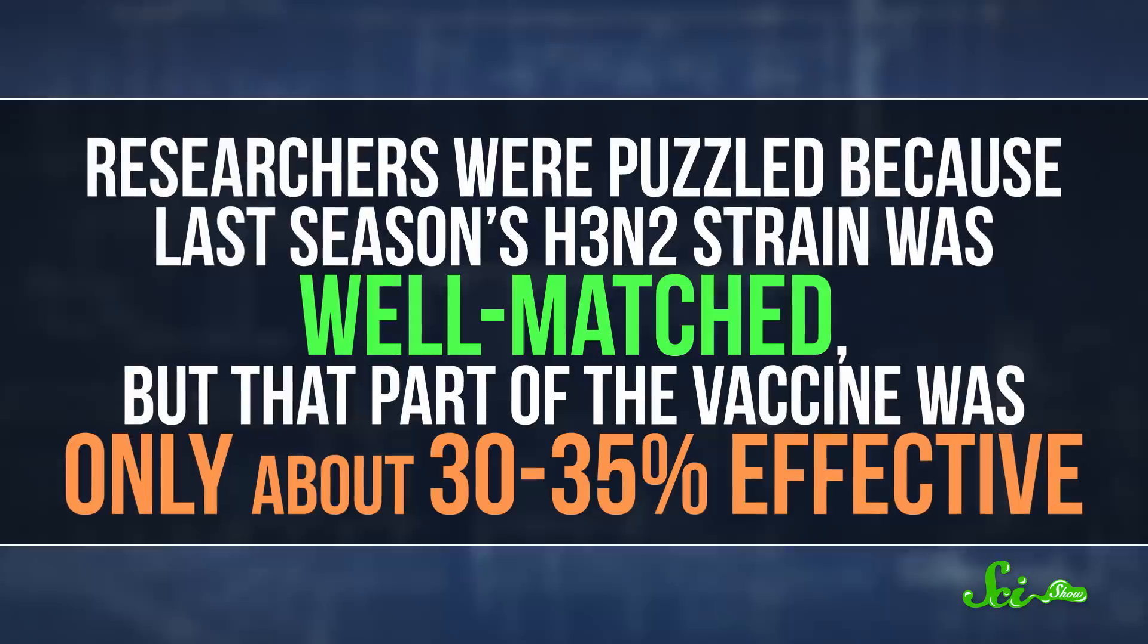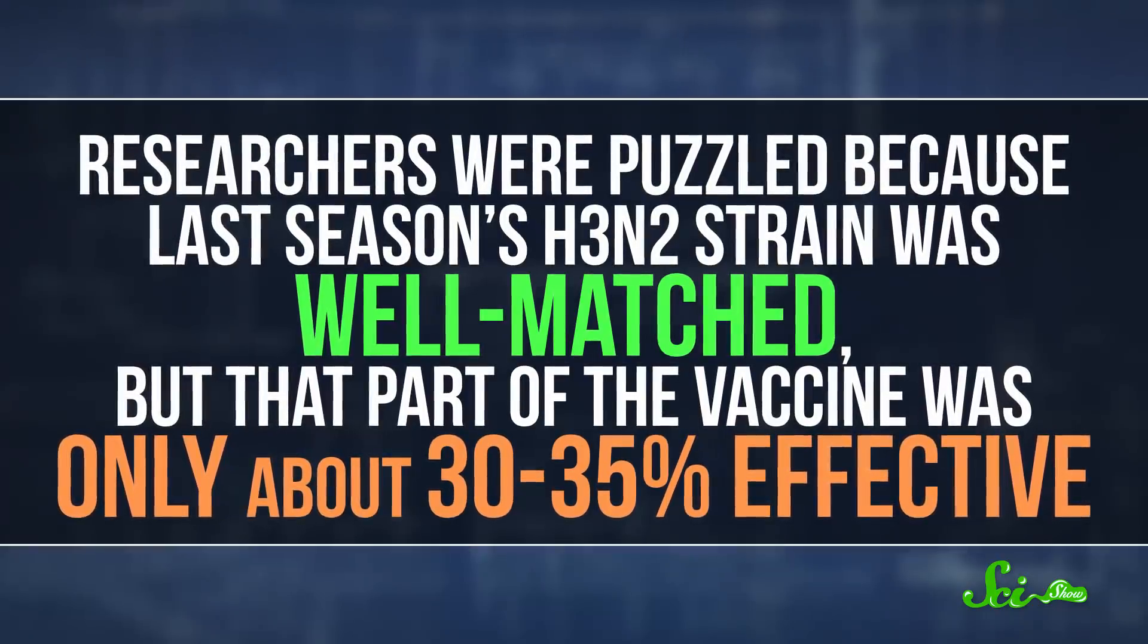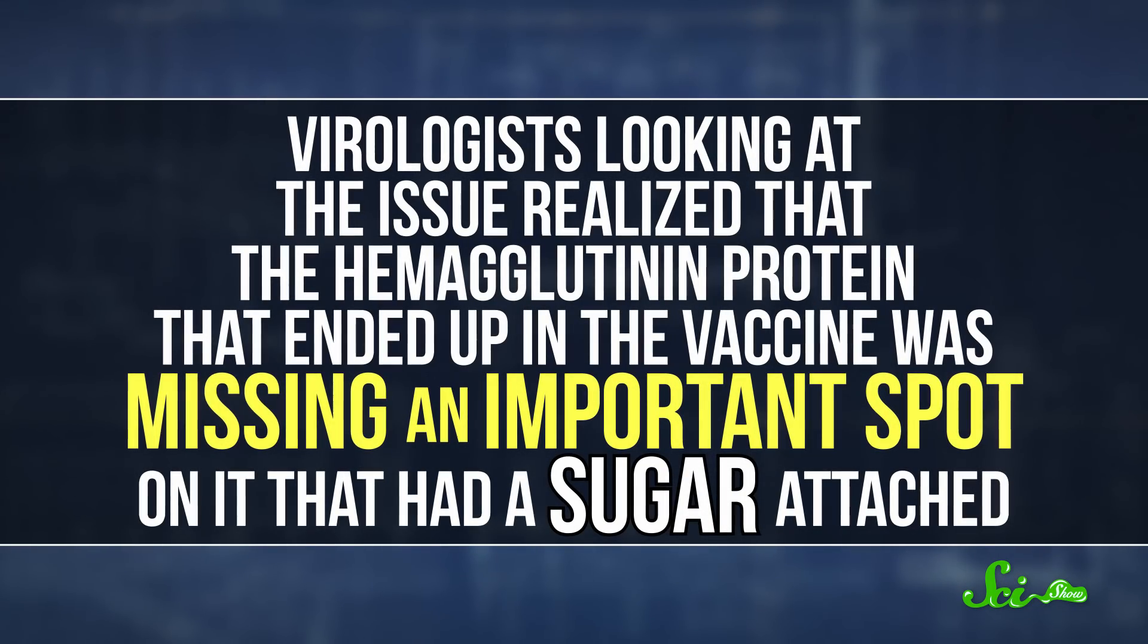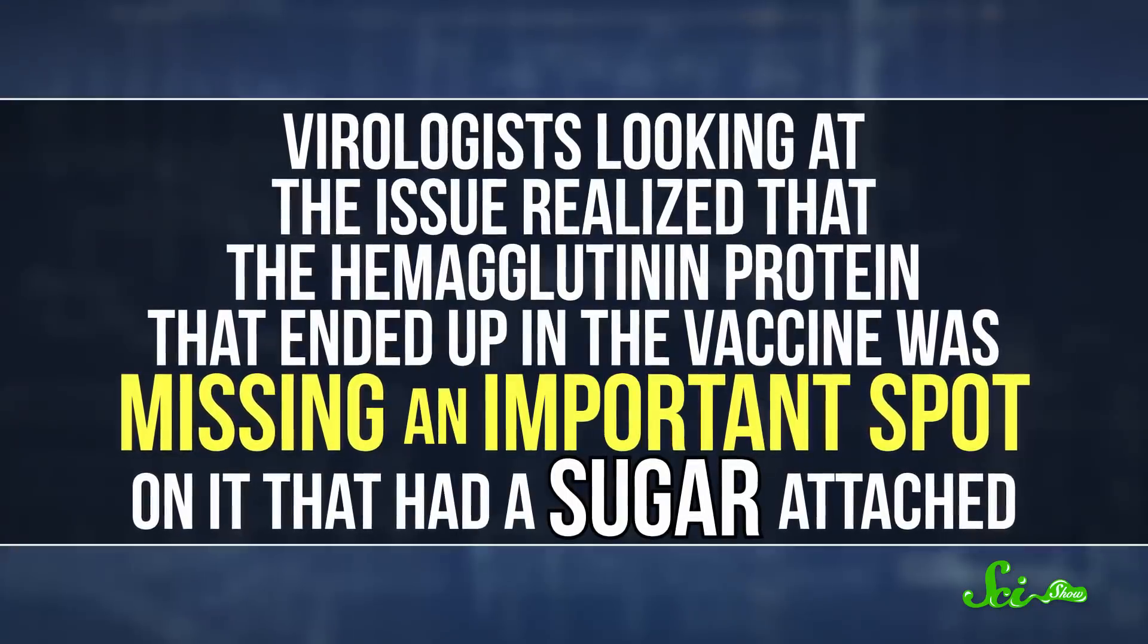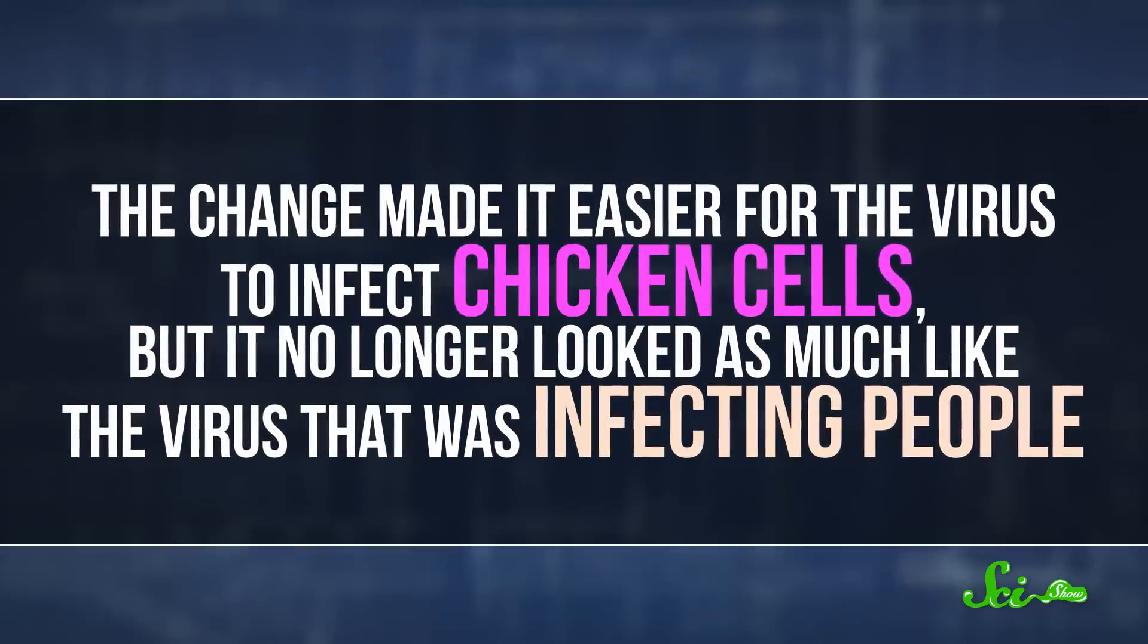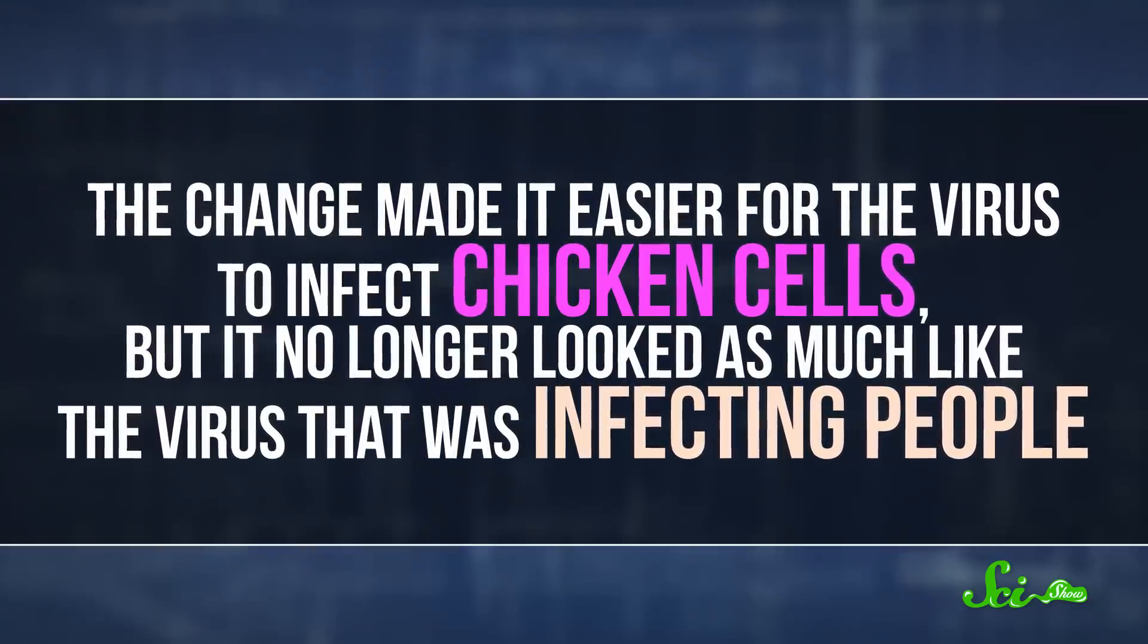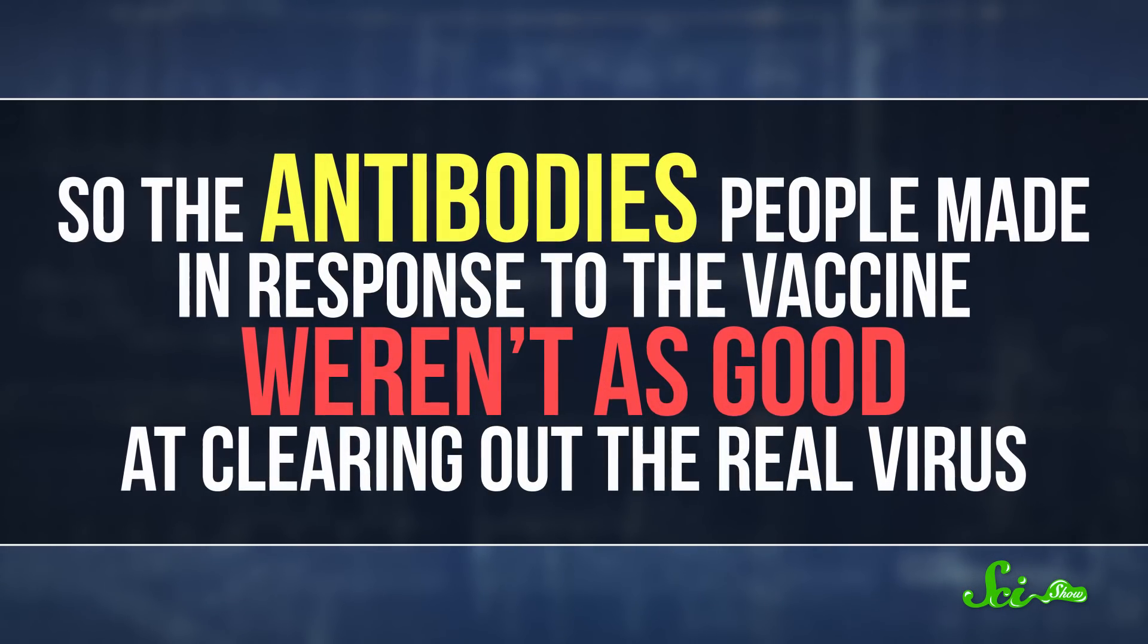Researchers were puzzled because last season's H3N2 strain was well-matched, but that part of the vaccine was only about 30 to 35 percent effective. Virologists looking at the issue realized that the hemagglutinin protein that ended up in the vaccine was missing an important spot on it that had a sugar attached. That change made it easier for the virus to infect chicken cells, but it no longer looked as much like the virus that was infecting people.